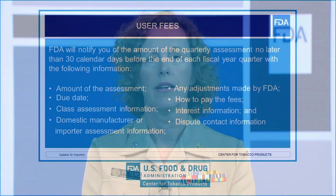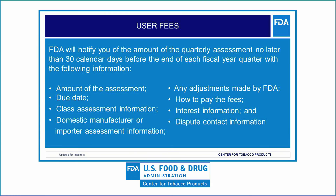The guidance contains detailed information on what you must submit and how FDA uses this information to assess user fees. FDA will notify you of the amount of the quarterly assessment no later than 30 calendar days before the end of each quarter of the fiscal year.